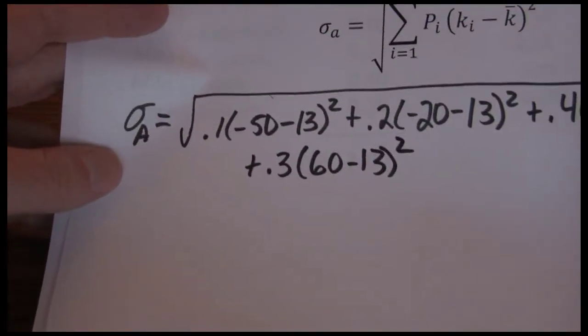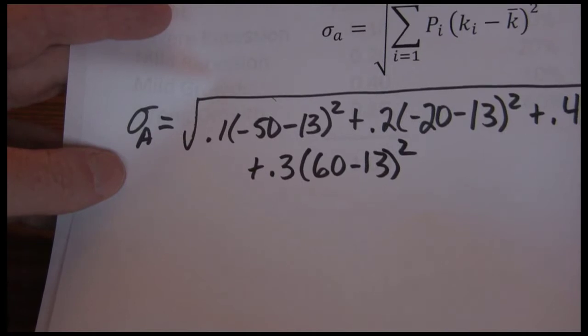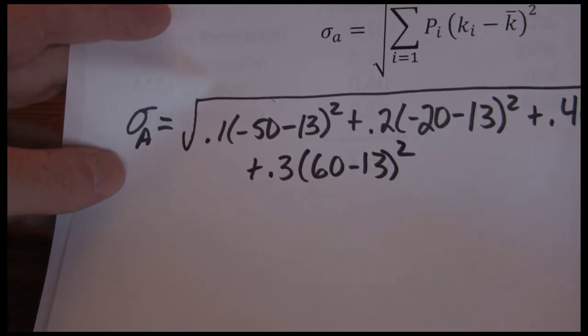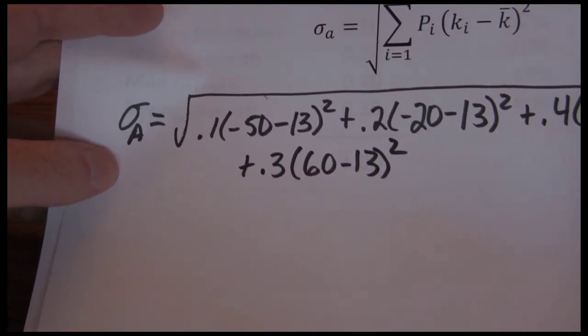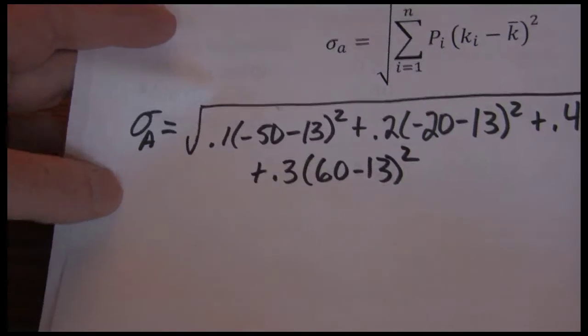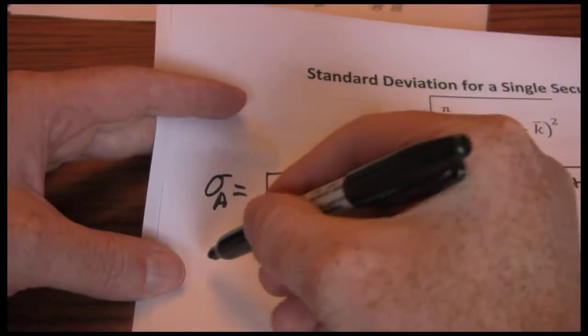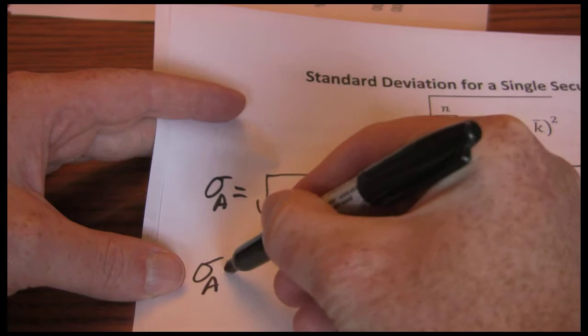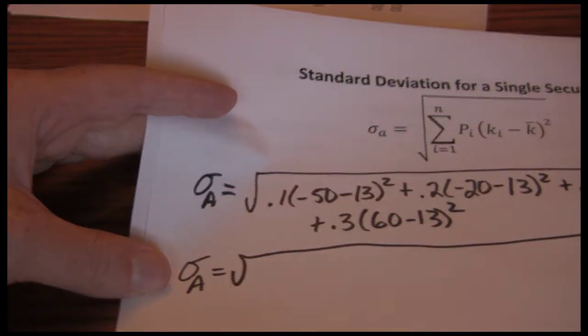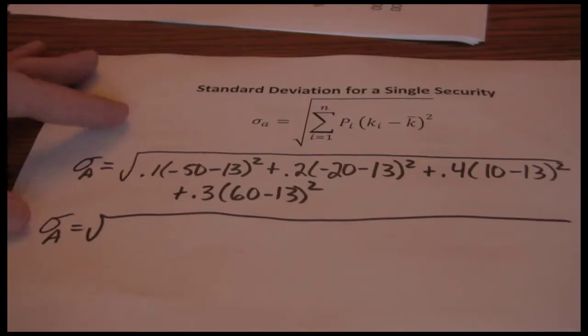Now one of the most common places people make mistakes here is order of operations. And the other common mistake people make is dropping negative signs. So be careful with both of those as we move through the process. All that's left is some math. So let's walk through that.